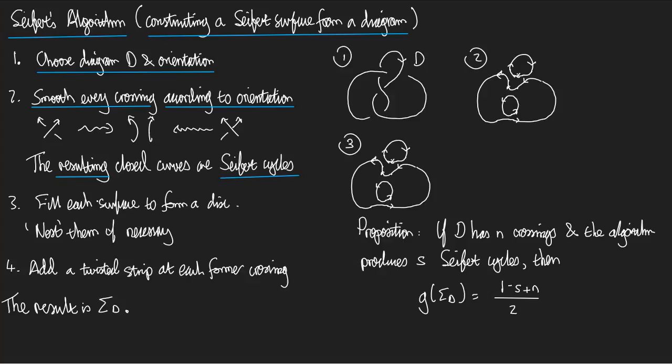Fill in each cycle to form a disk. So, for example, I could fill in this cycle like this. That's a disk there. And now I should fill in this big cycle. Right? And I should fill in this little cycle as well. Well, that sounds a bit awkward because I'm sort of crossing them over. So, what I do is I imagine myself nesting the diagrams if necessary.